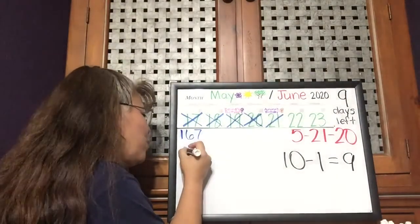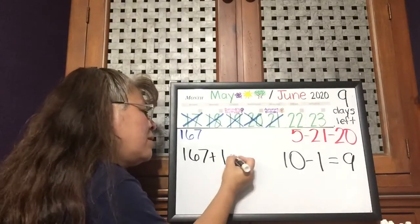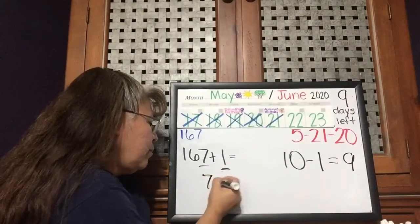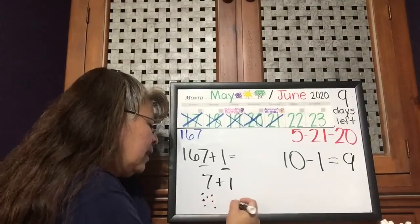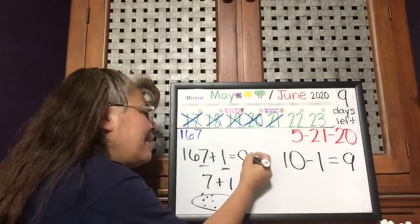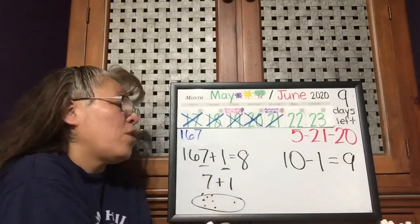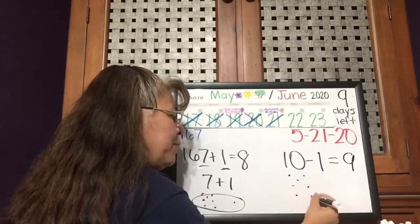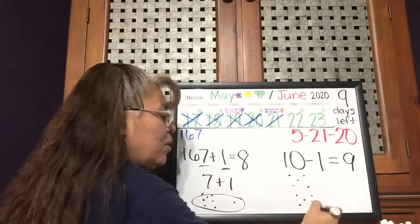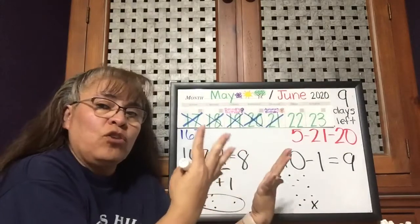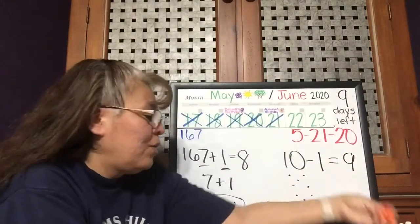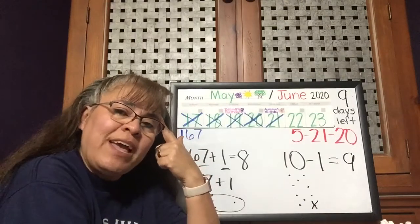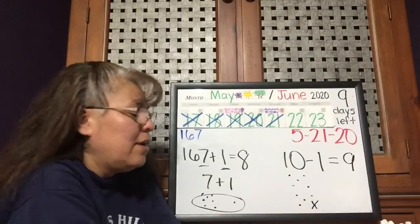Now let's look at our next number: 167 plus one more. We're still going to add only to the ones place. So if we have 7 plus 1, that makes 8. Here we're counting backwards and here we're counting forward — taking one away, adding one. You can use your fingers, the cubes, or draw a picture to always help you make sure you've got the answer, and it helps you check to make sure it is right.